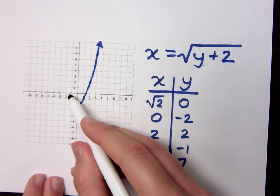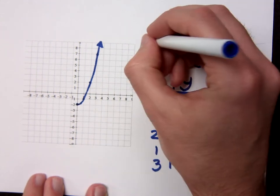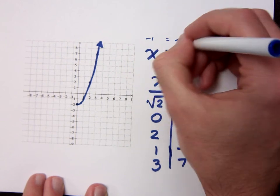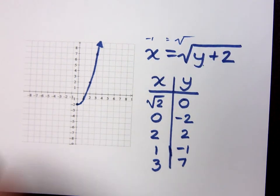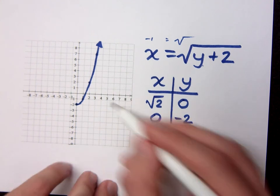Because what if you try to have x as negative 1? Does negative 1 equal the square root of this guy? No, it's not valid. You would never get a negative out of this guy. So this is all you have for that particular graph.